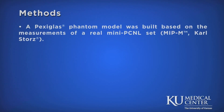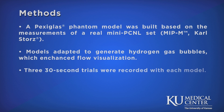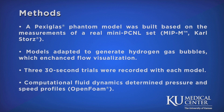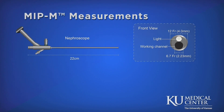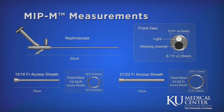Our methods included a phantom model that we built made of plexiglass, based on the measurements of a real Mini-PCNL set. To visualize the flow, the models were adapted to generate hydrogen gas bubbles. Three experiments lasting 30 seconds were recorded for posterior computational fluid dynamic analysis of pressure and speed profiles. We utilized the MIPM set from Carl Storrs, which contains both 15-16 French and 21-22 French access sheaths.